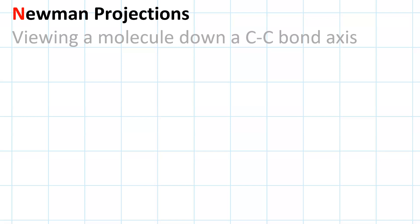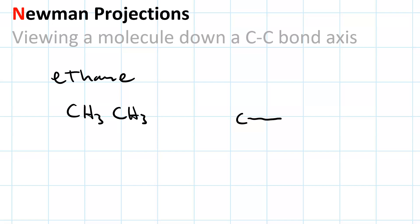Newman projections are a way of viewing a molecule down the C-C bond axis. Consider the molecule ethane. Ethane is C2H6, really two CH3 groups bonded to each other. Each of the carbons is sp3 hybridized and hence tetrahedral.